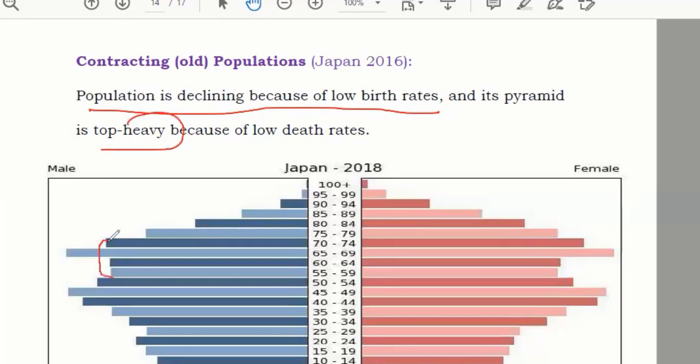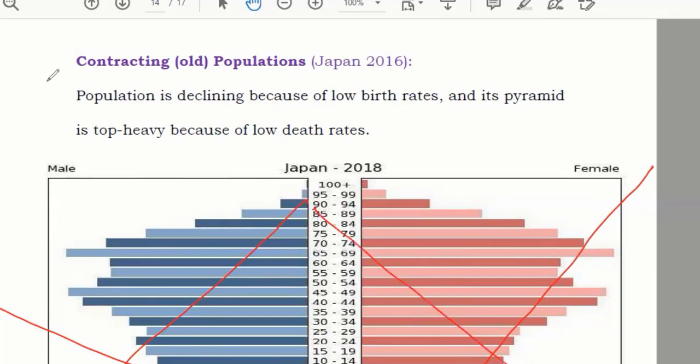This top is heavy. You can see here, normally pyramids go like this, but this is going like this. So if you have a pyramid which is going like this shape, instead of going like this, that is known as contracting old population pyramids.